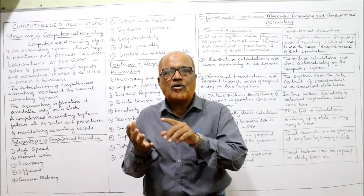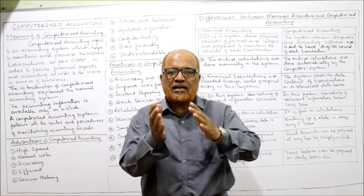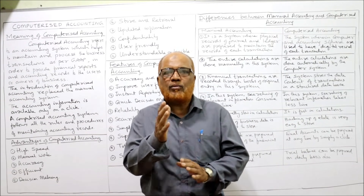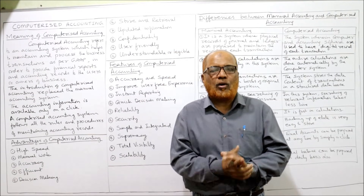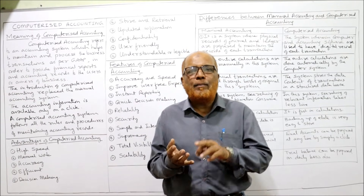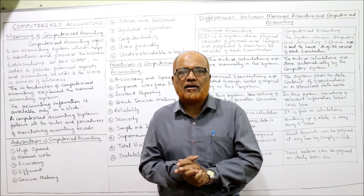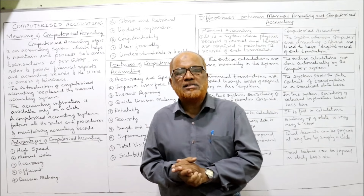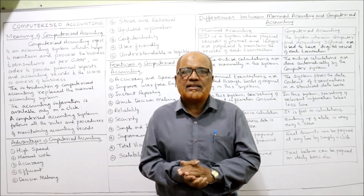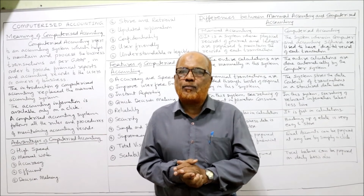I'll cover the meaning of computerized accounting, its features, advantages, limitations, and differences between manual accounting and computerized accounting. The five units to be covered in this subject are: first, maintaining the chart of accounts in ERP; second, maintaining stock keeping units; third, recording day-to-day transactions; fourth, managing accounts receivable and accounts payable; and lastly, MIS reports in ERP.